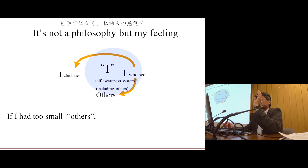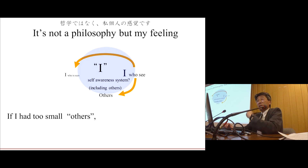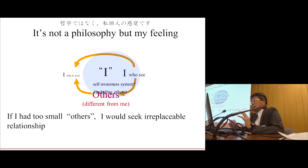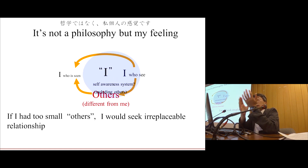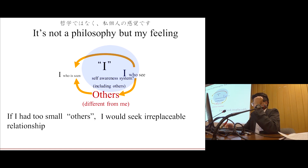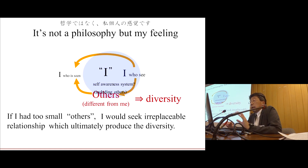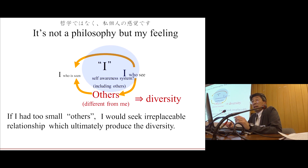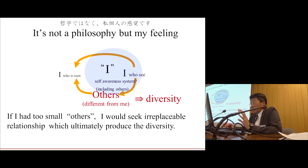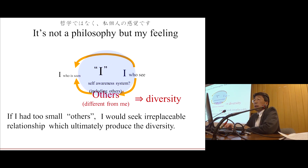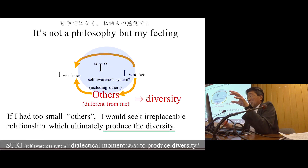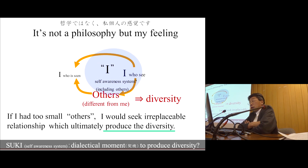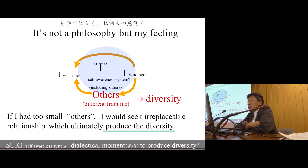For example, I had two small others. In that case, maybe I would seek an irreplaceable relationship to others. The others are different from me. Maybe this kind of thing ultimately produces diversity. I feel that this suki, this kind of relationship, makes diversity.